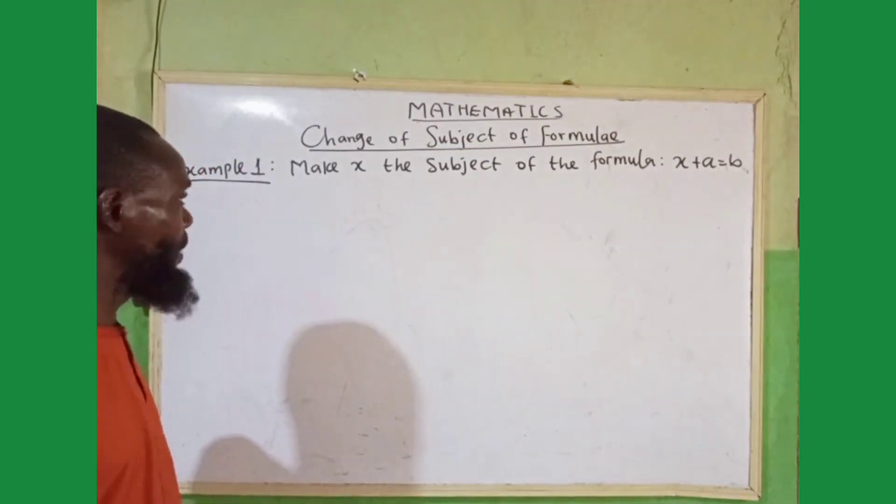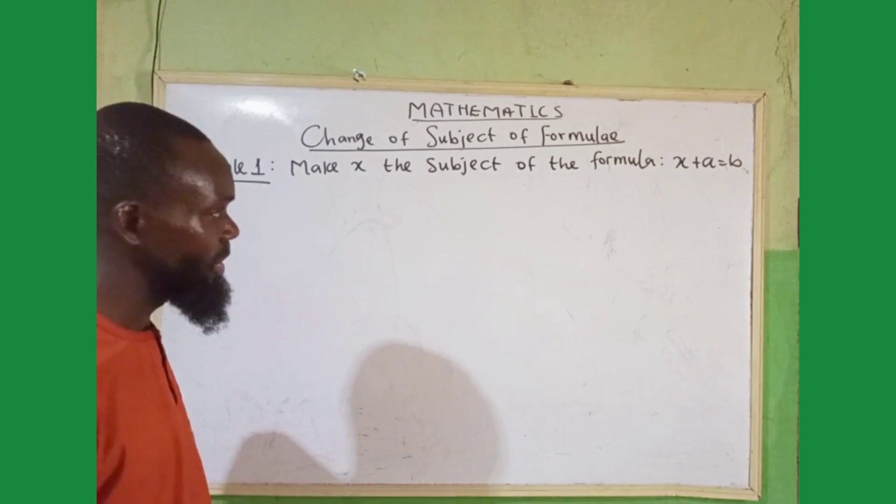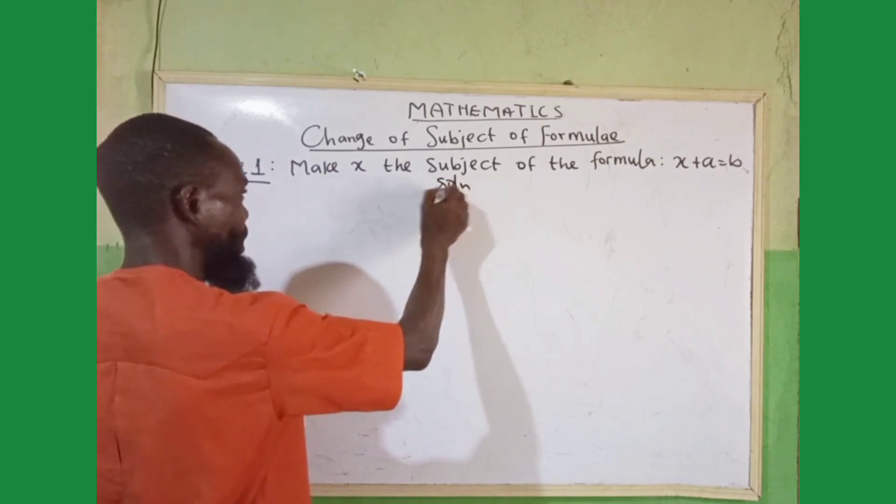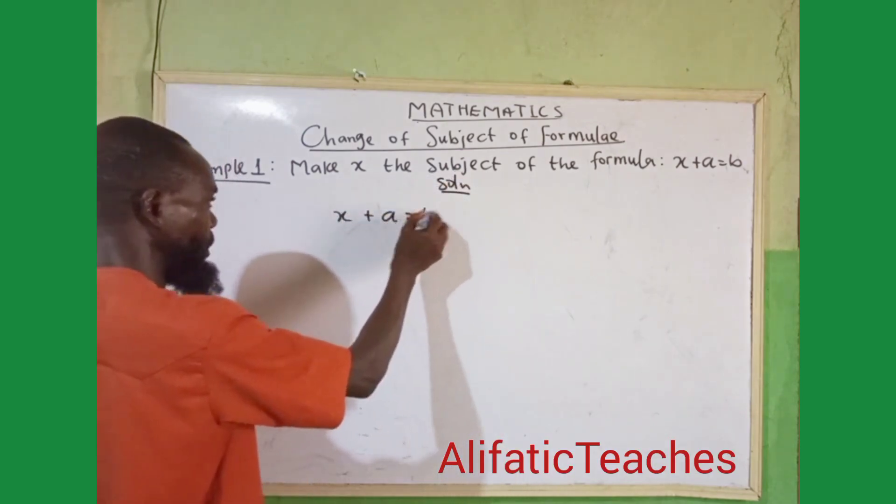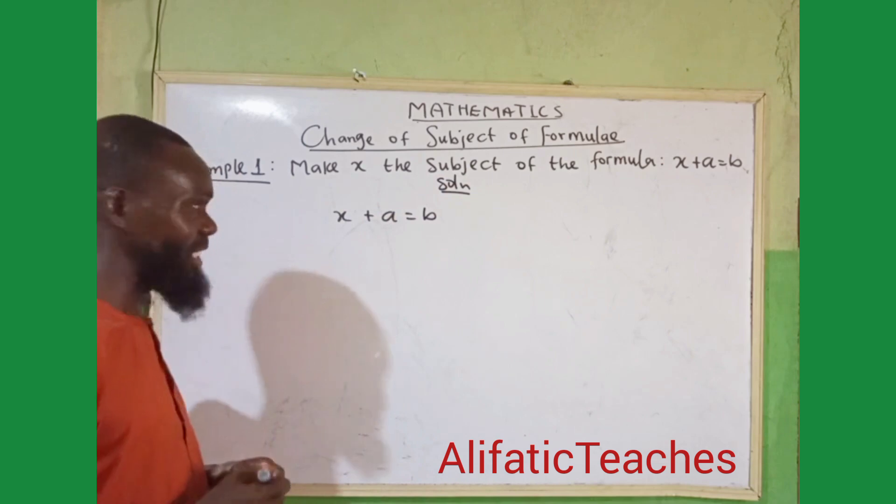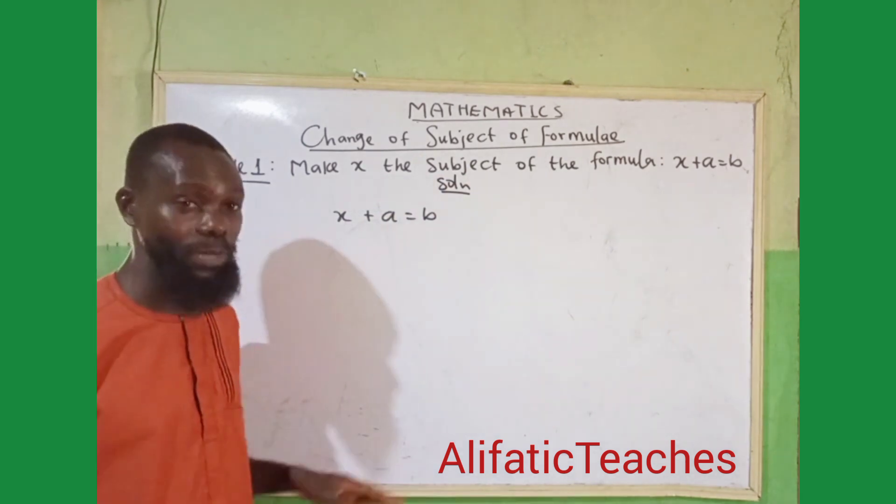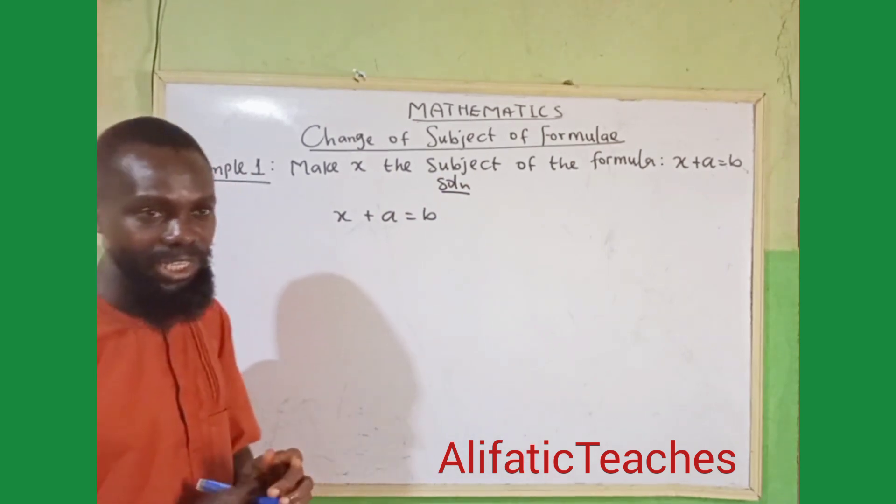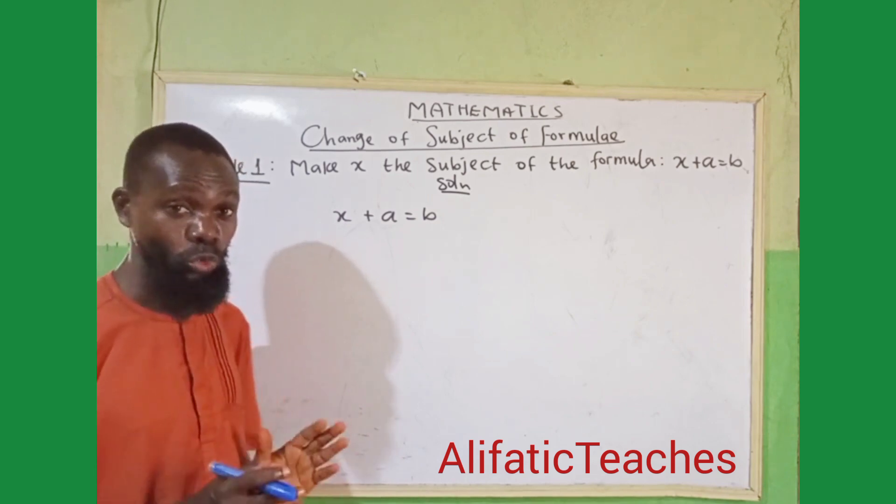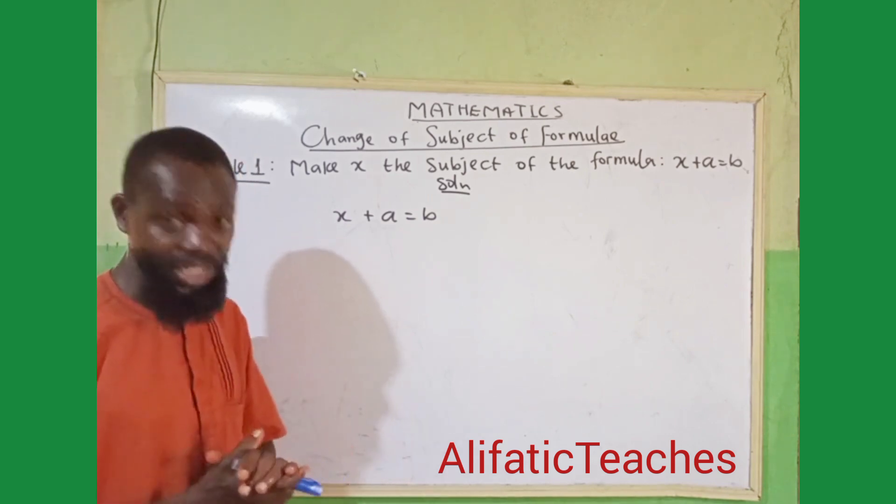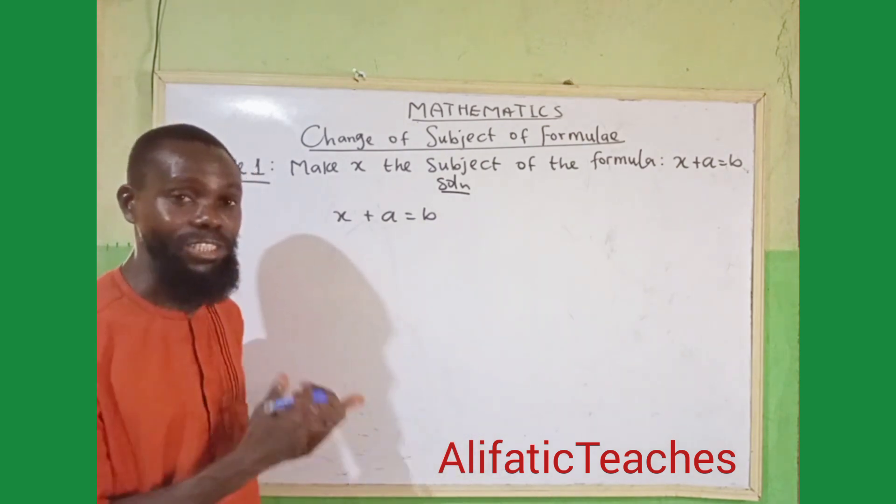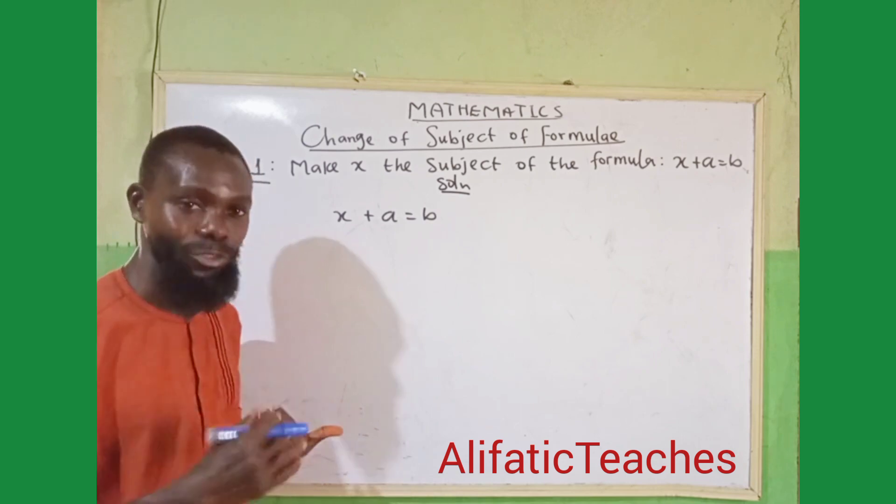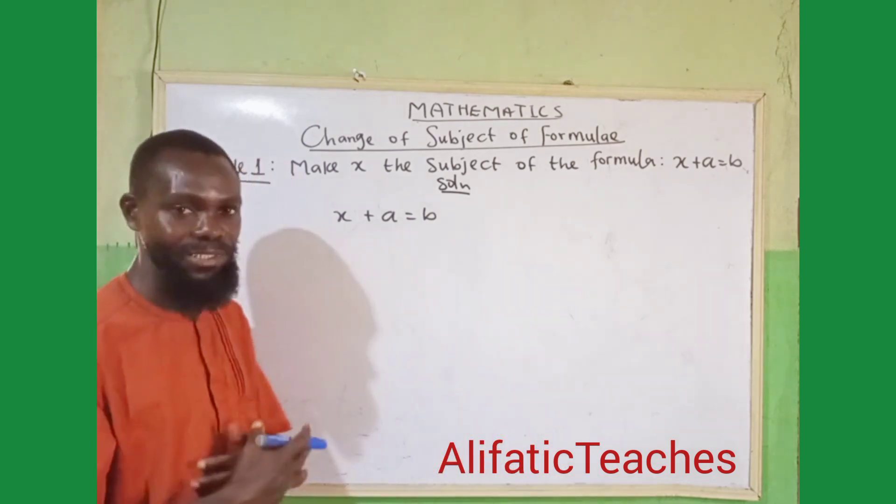Example 1, make x the subject of the formula x + a = b. Now, looking at that question, the first thing is, you want to find x. That's the meaning of make x the subject of the formula. One thing that comes to your mind is, always make your unknown, what you are looking for, to be at the left hand side. It can also be at the right hand side, but let it always be at the left hand side. And the known means, those you don't need. You are not looking for them. Let them be at the right hand side.